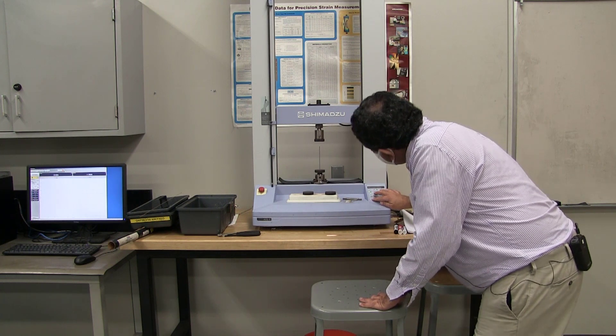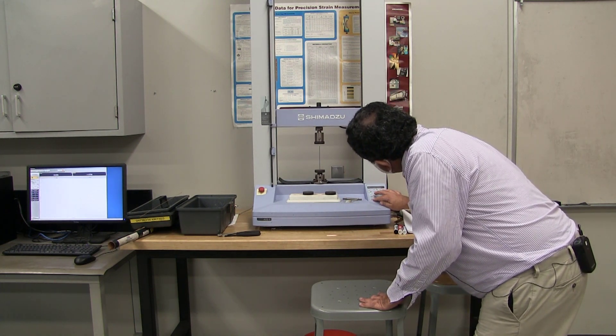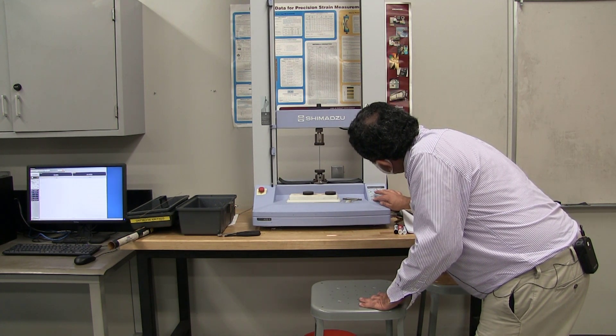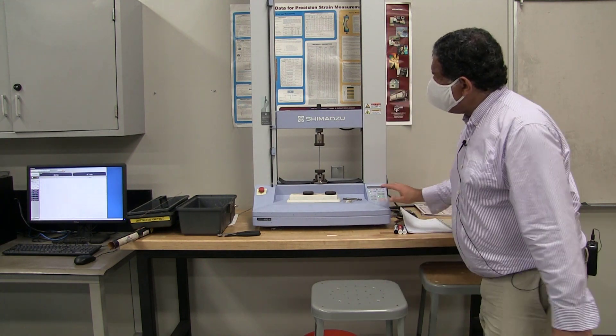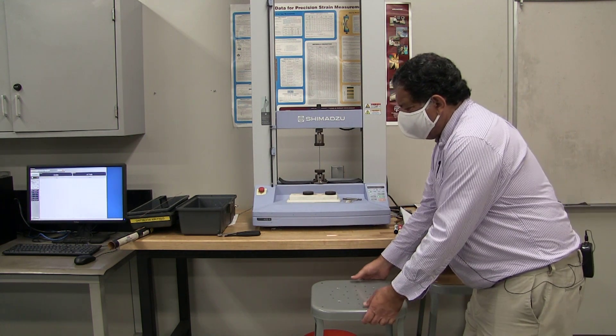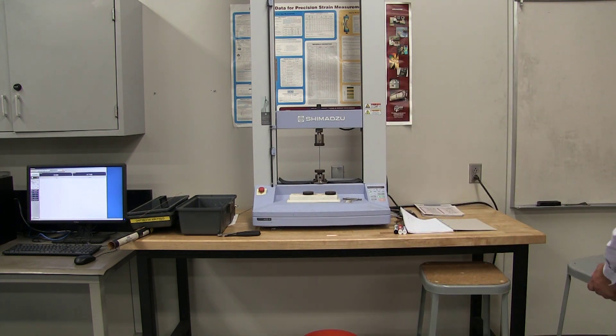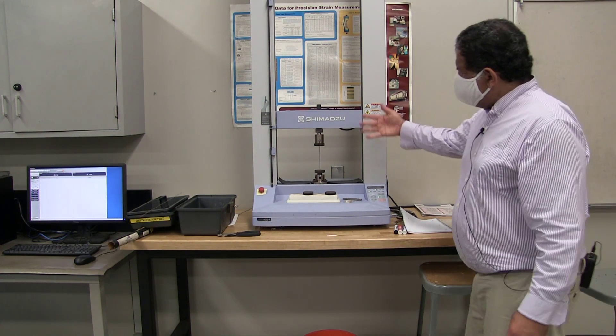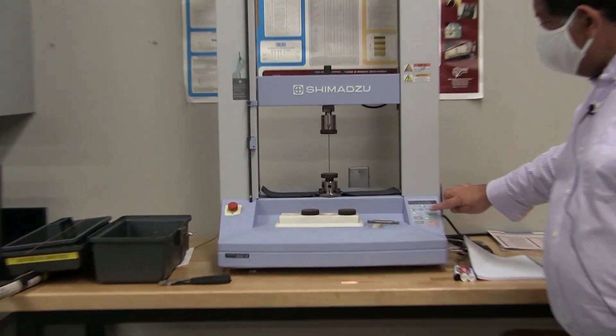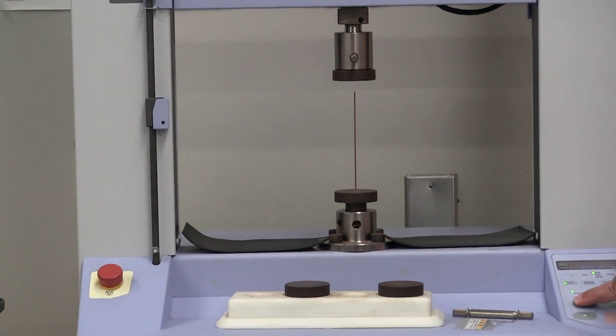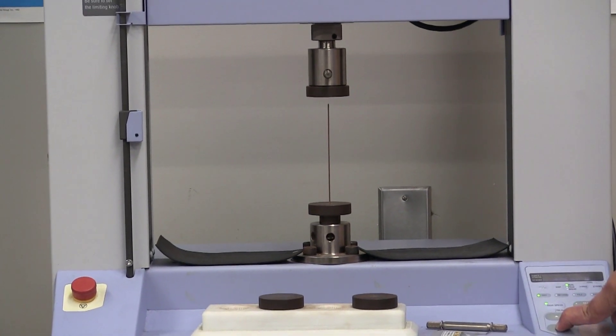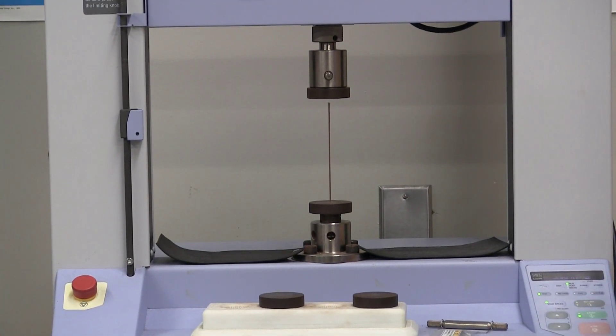Then just jog it down. When I get close to my specimen, I'm going to change from the high-speed jog to the low-speed jog. You can move this crosshead fast for positioning purposes. This is high-speed jog. When you want to make gentle adjustments, you push this button, and then it moves a whole lot slower.